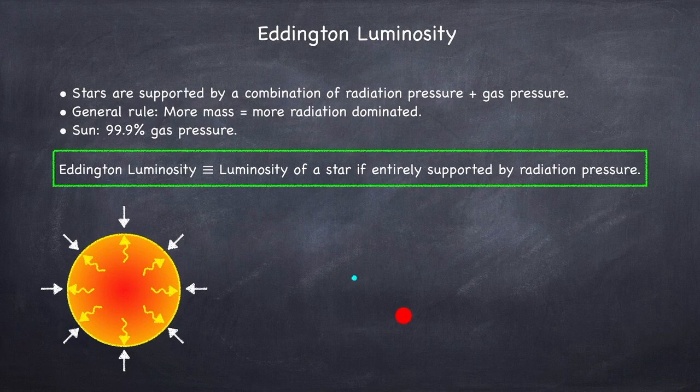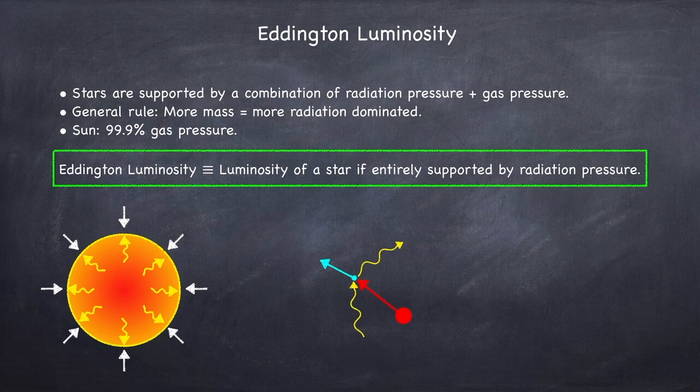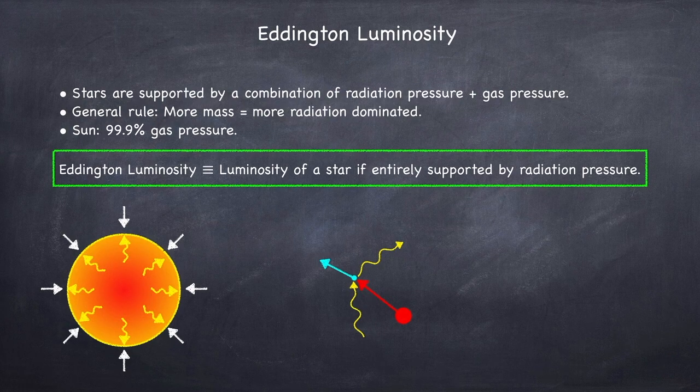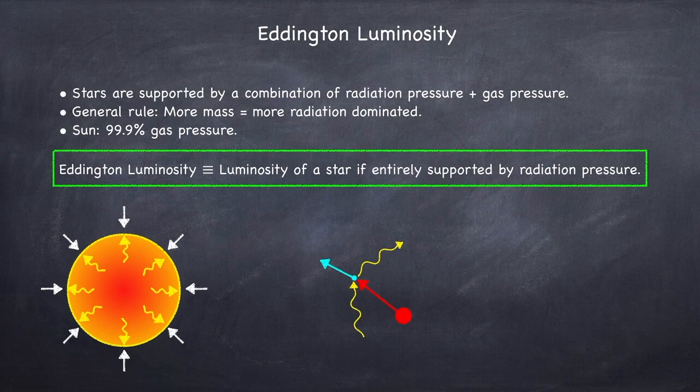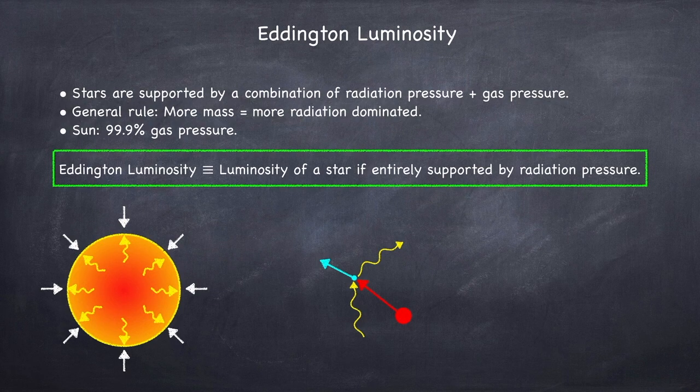If a photon comes along, it will scatter off the electron, imparting some momentum onto it. That electron will then drag the proton along with it via the electric force between the two. Recall that the electron is negatively charged and the proton is positively charged, so they attract one another.